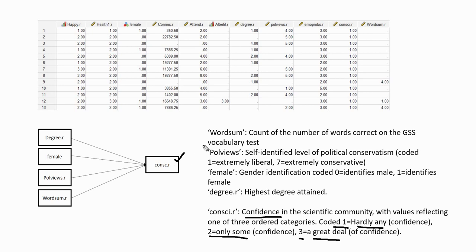Our independent variables within our model include degree — that's highest degree attained for a given person. We have female, that's our gender identification variable, coded zero where a person indicated identifying as male, and one where a person identified as female. We have a political views variable — a scale variable ranging from one, equals extremely liberal, to seven, equals extremely conservative. And then we have a word sum variable, that's the vocabulary test which is part of the General Social Survey.